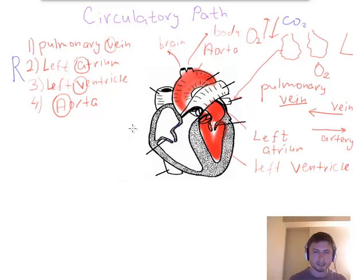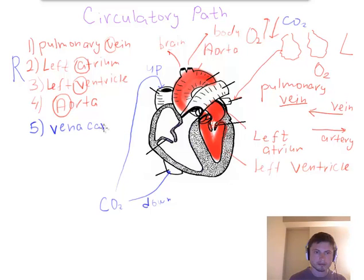The blood that has CO2 comes back into these two things. This is CO2 blood, carbon dioxide blood, and it comes back to this here. This is from your upper body, and this is from your lower body. This is step number five, we call this vena cava. This one is called superior vena cava, and this is your inferior vena cava.